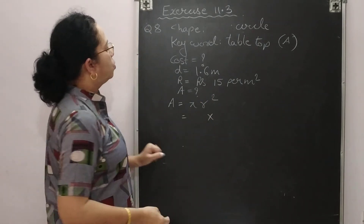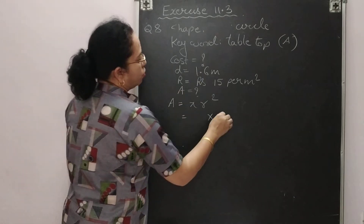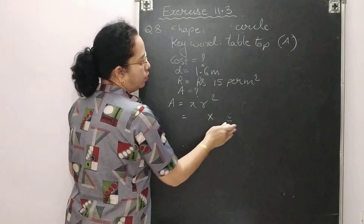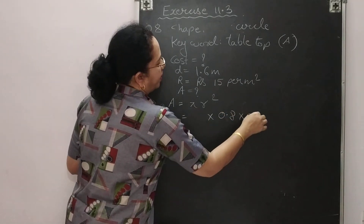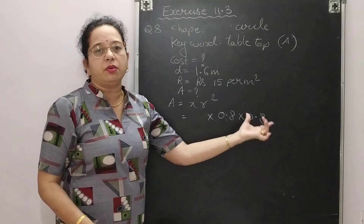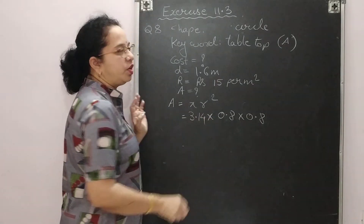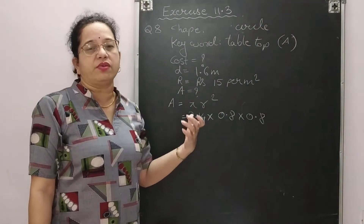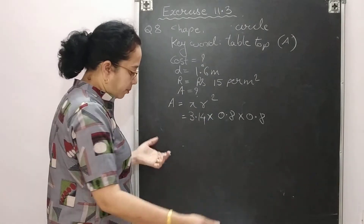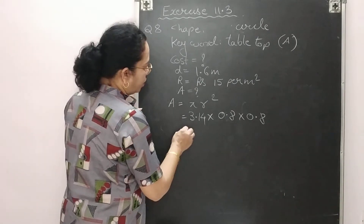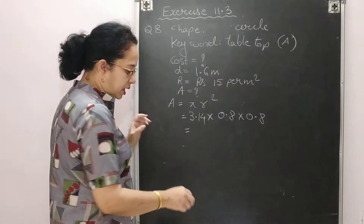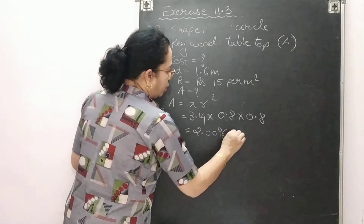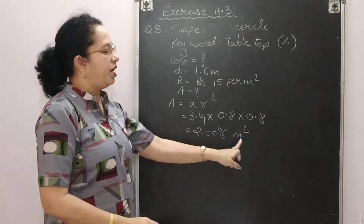Since 0.8 is not divisible by 7, use pi = 3.14. Area = 3.14 × 0.8 × 0.8 = 2.0096 meter square. Unit is meter square as we are finding area.